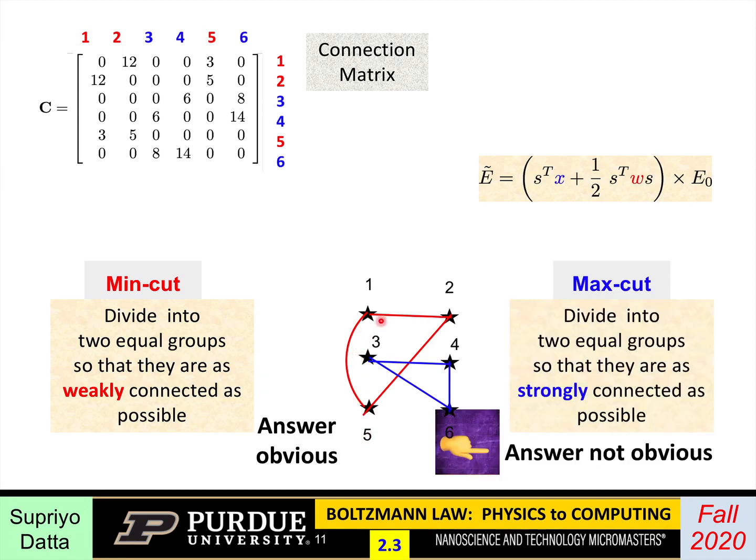Now, the reverse problem, that's a max-cut problem. How do you divide them so that the connections are as strong as possible? In this case, it's not immediately obvious, because it means that you should take 1, 2, and maybe another from the other group, or maybe 1 and 2 more from the other group. So there's many possibilities, and it's not immediately obvious which one. The method we'll describe allows you to solve both these problems.